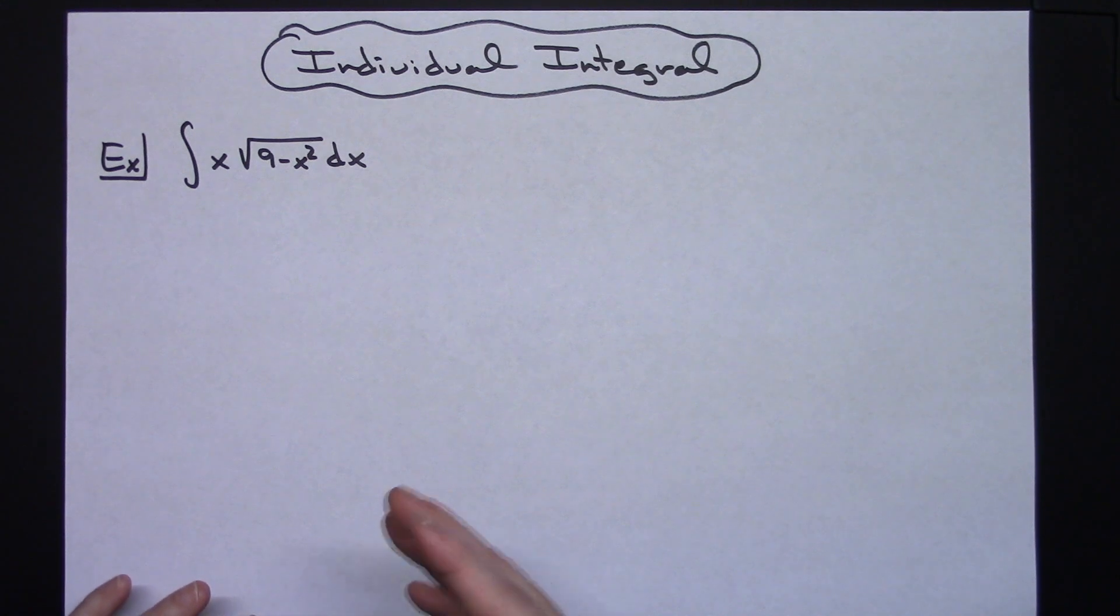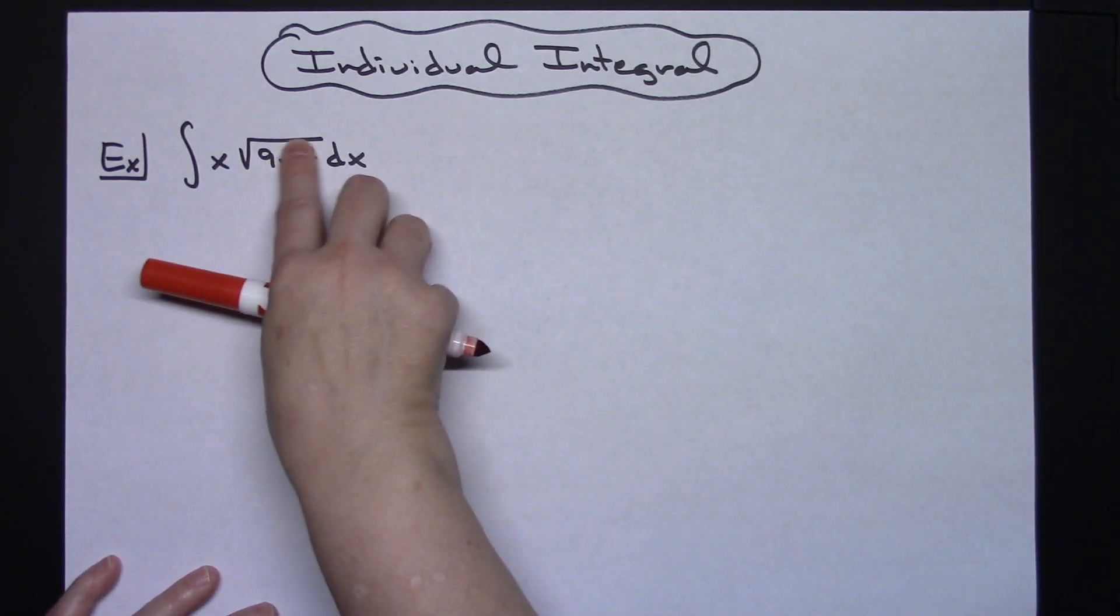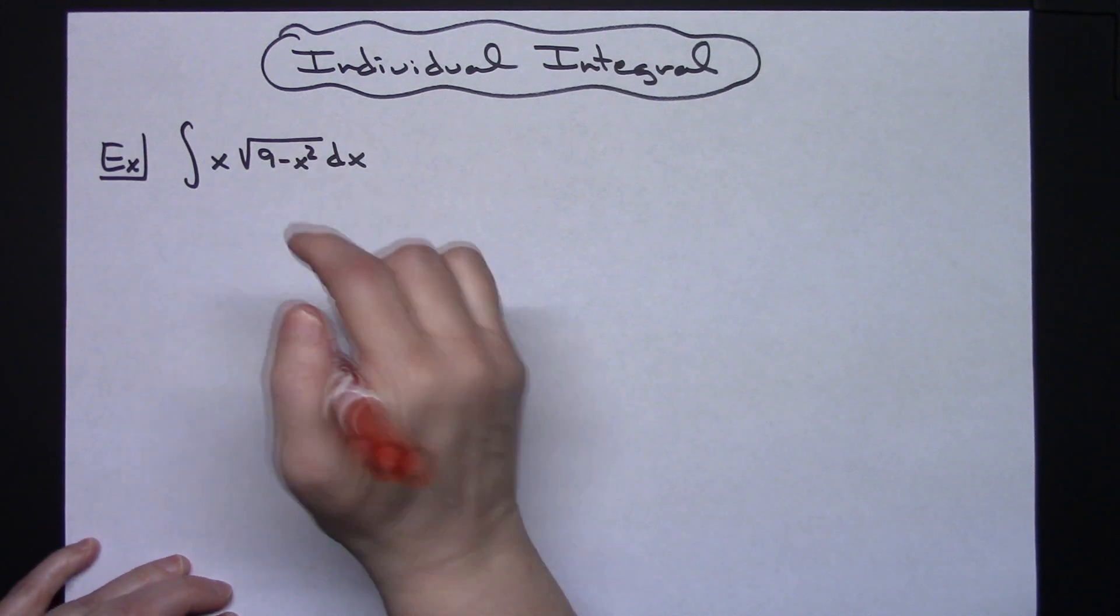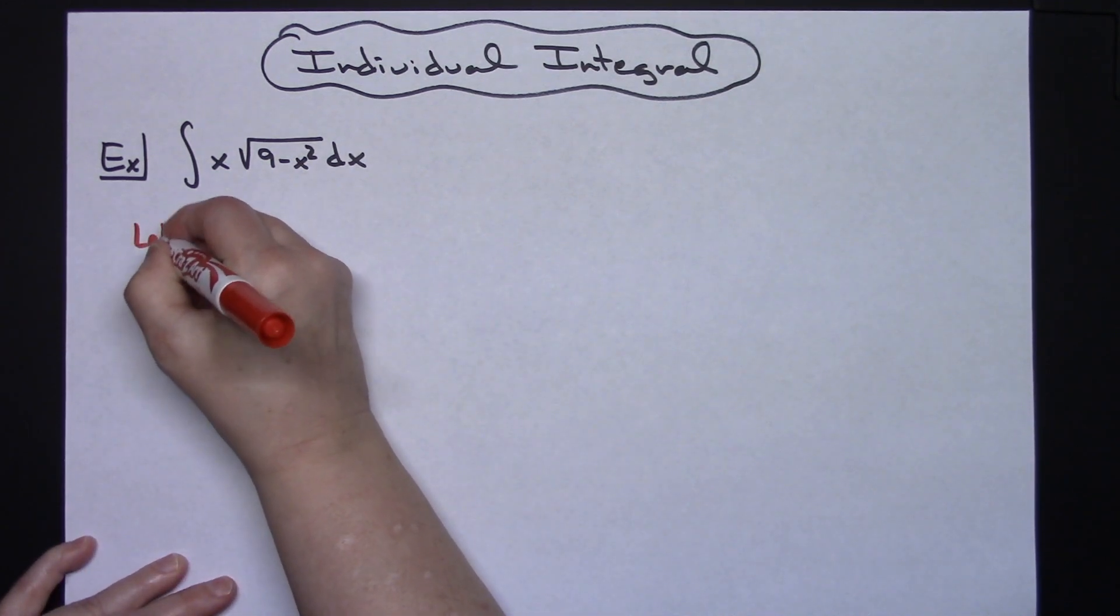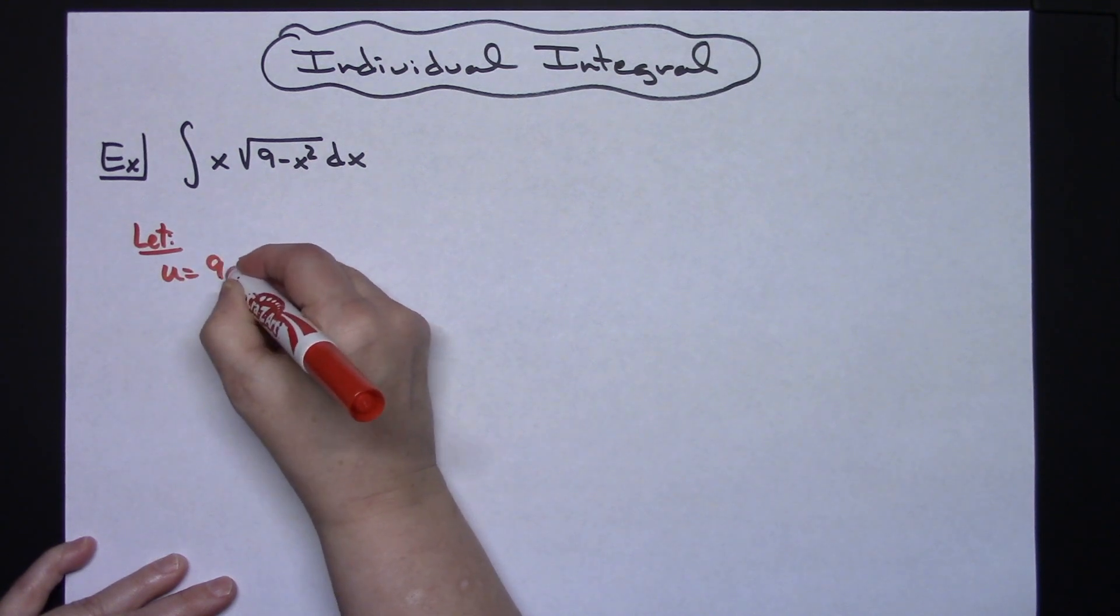For a u-substitution, you're going to try to find that inside most part of the function. My inside here is that 9 minus x squared, so I'm going to let my u equal 9 minus x squared.